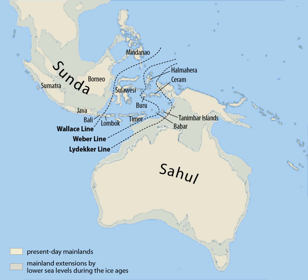Sundaland is a biogeographical region of southeastern Asia corresponding to a larger landmass that was exposed throughout the last 2.6 million years during periods when sea levels were lower. It includes the Malay Peninsula on the Asian mainland, as well as the large islands of Borneo, Java, and Sumatra and their surrounding islands.